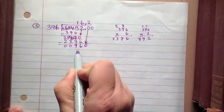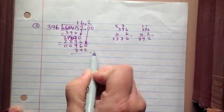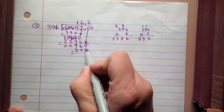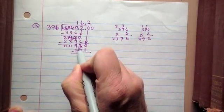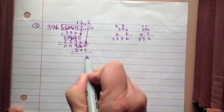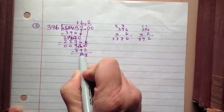So now 2 times 396, 792 goes here. Subtract those two. 0 minus 2 can't do, need to borrow a 10, bring it here, 8. 5 minus 9 can't do, need to borrow a 10, put it here. 15 minus 9 is 6, 8 minus 7 is 1.